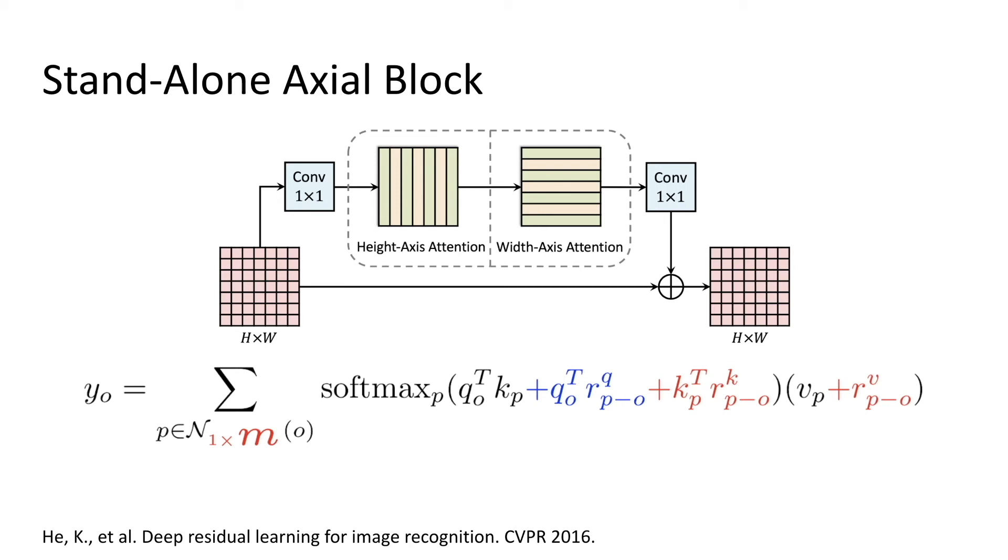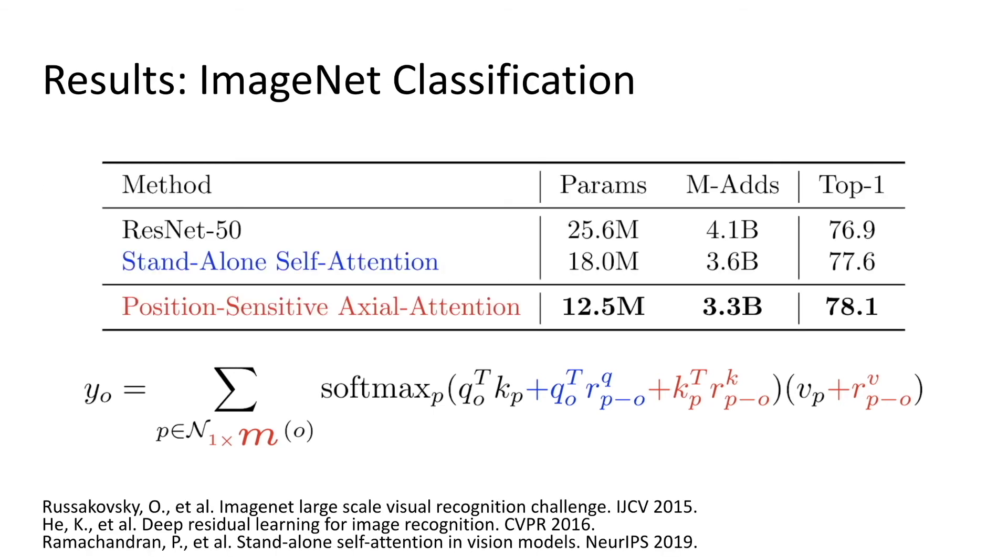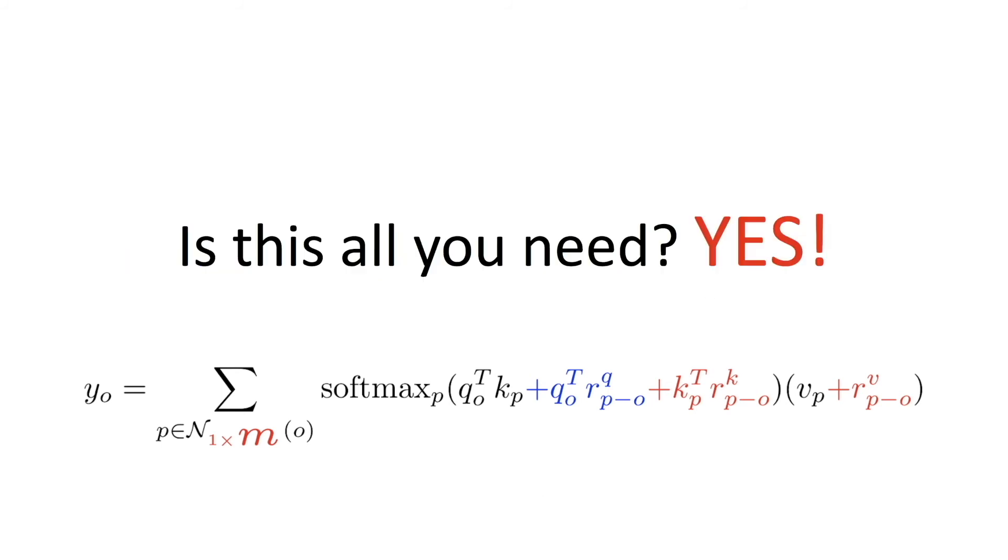Specifically, we replace all convolutions in a ResNet-50 by our position-sensitive Axial Attention, and validate it on ImageNet classification. We change the number of channels so that our model has fewer parameters and flops, but we still observe that our Axial Attention performs better than both the baseline ResNet and any previous standalone self-attention models. Now we have confirmed that the answer is yes. This Axial Attention is all you need to build a good vision model.